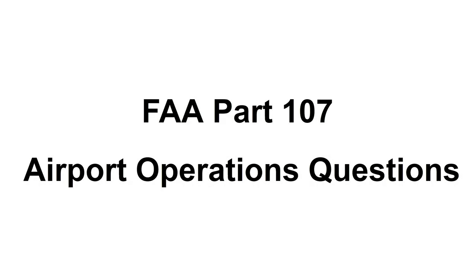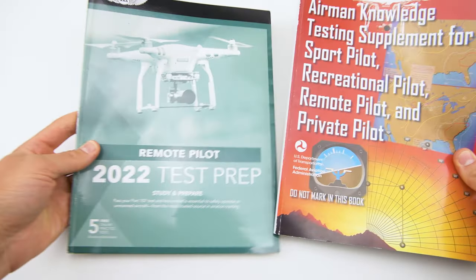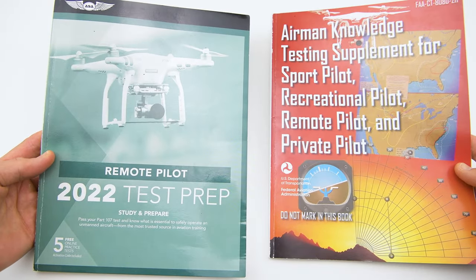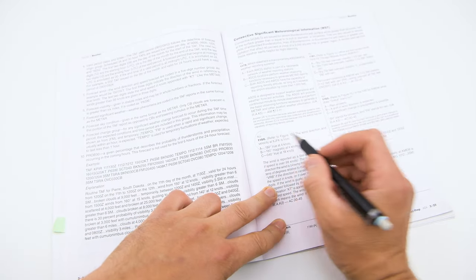Hello, in this video I will go over 10 questions that test your knowledge on the National Aerospace System, specifically on airport operations, markings and signs for the FAA Part 107 Commercial Drone Exam. Most of the questions in this video are coming from the study guide I used to prepare for the exam, which I successfully passed with a 90% score in 2022. Check out the video on how I prepared for the exam in the link above and in the description. Take a look at the study guide I used in the description as well.